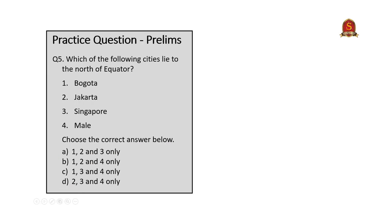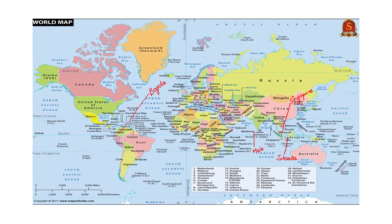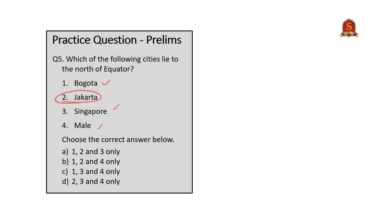The fifth question asks which cities lie to the north of the equator. Except Jakarta of Indonesia, the other three cities — Bogota, Singapore, and Malé — are all very close to the equator and lie north of it. Jakarta, despite being close, lies south of the equator. The correct answer is C: 1, 3, and 4 only.